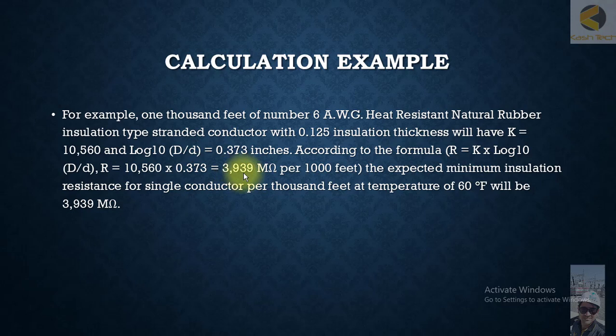So expected minimum insulation resistance for single conductor per thousand feet at temperature of 60 degrees Fahrenheit will be 3,939 megaohms. So this is one of the ways where you can find out the acceptance criteria for a given cable. Thank you very much.